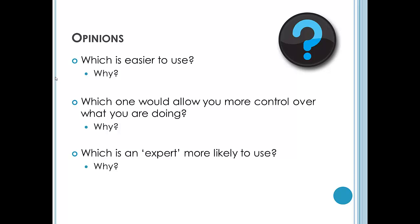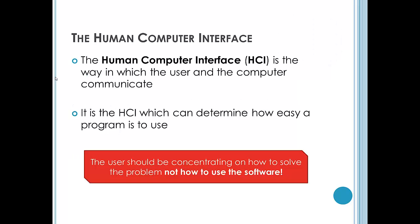So as we've already alluded to, the HCI is the way in which the user and the computer communicate. And it's primarily the HCI which can determine how easy a program is to use. Remember, programs are written to solve a problem. The user should be concentrating on how to solve the problem, not how to use the software. And we will look into the various factors that come into the positive user experience.